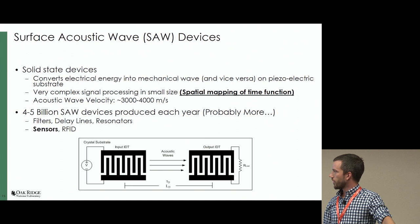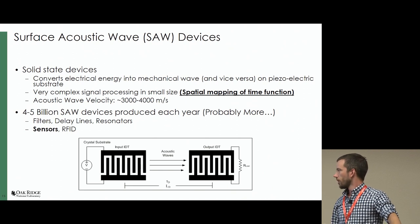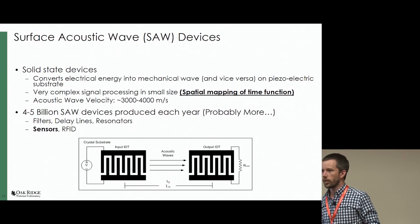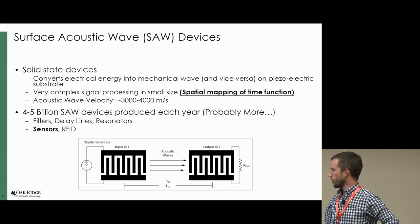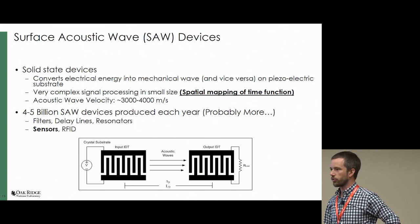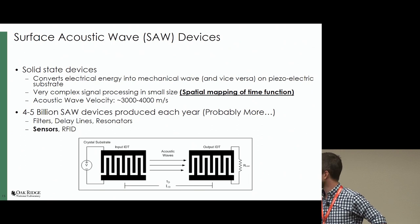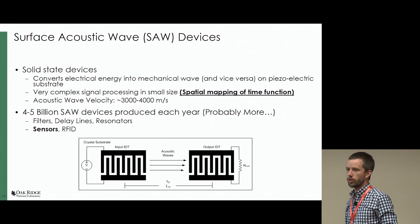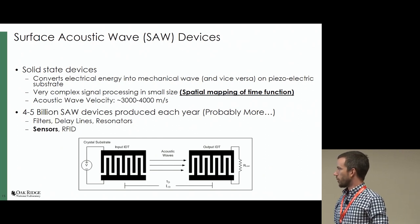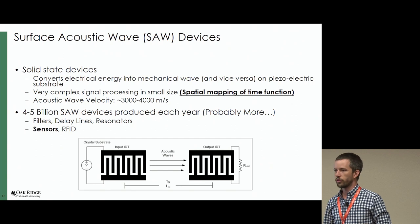A little background on surface acoustic wave devices: these are solid-state devices typically used for filtering or delay lines. You can incorporate very complex signal processing in a small size — it's quite literally a spatial mapping of a time function. Looking at the diagram, this is like a delay line filter with an input transducer, an output transducer, and an acoustic wave that travels between the two. The overlap of the interdigitated fingers forms a rectangle — a rect function in time — and if you look at it in frequency you'd get a sinc function output. If you adjust the overlap to look like a sinc function, you get kind of a brick wall filter. There are billions of these devices produced each year, mostly as filters, delay lines, resonators, and more recently sensors and RFID.